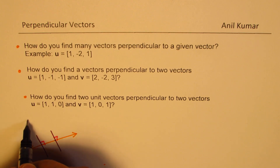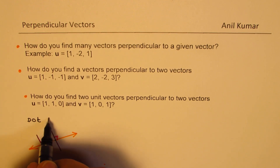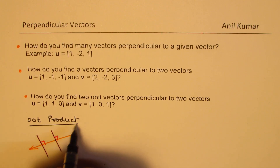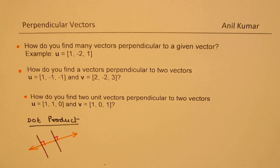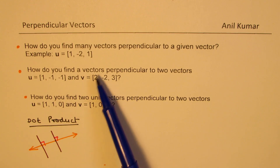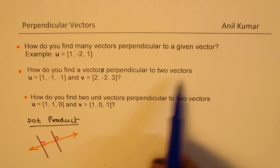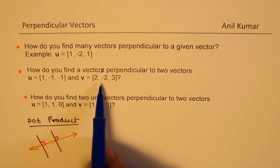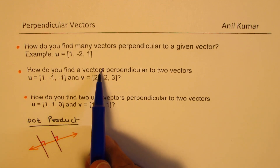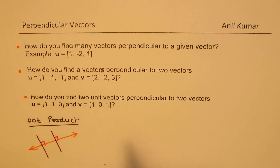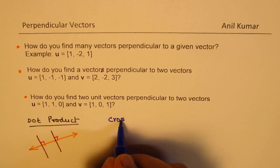We will look into the procedure of finding many vectors perpendicular to a given vector. I am going to use the concept of dot product for the first question. In the second case, we are given two vectors, and the question is how do you find a vector perpendicular to two vectors. Whenever you are given two vectors, the best method is to use cross product.